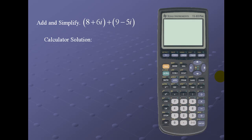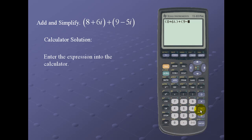Let's look at the calculator solution. We'll simply enter the expression exactly as we see it: a beginning parenthesis, then 8 + 6i. Notice that the i is above the decimal point and it's yellow, so it's second then decimal point. Close the parenthesis, plus 9 - 5i, for a result of 17 + i.